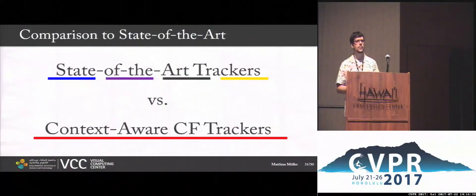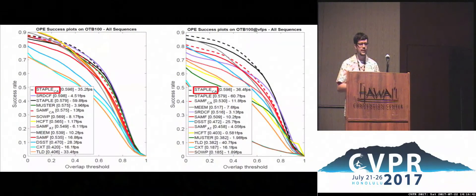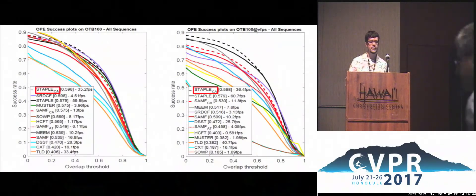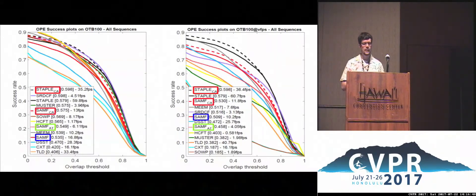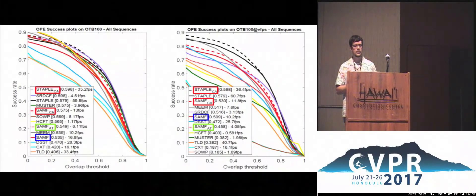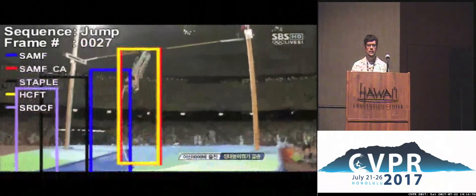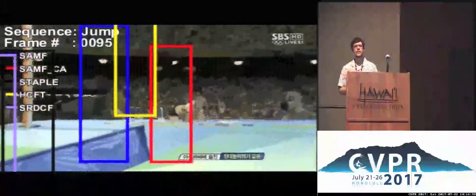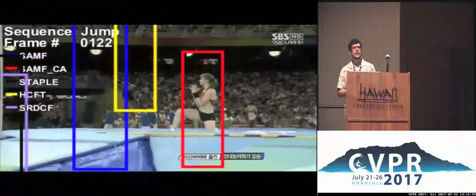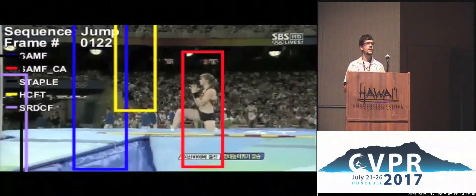Lastly, a comparison to state-of-the-art. Staple CA places at the top. By now there are a few more state-of-the-art trackers of course, and the context-aware version places above the AT framework. That's it — I'll be happy to take any questions.